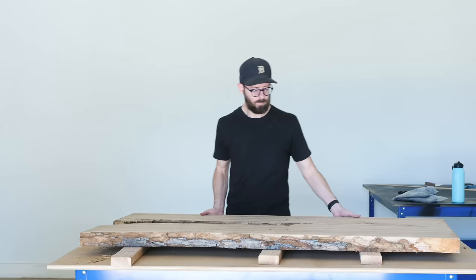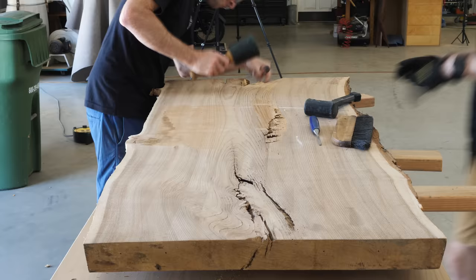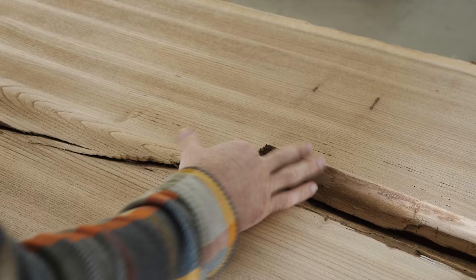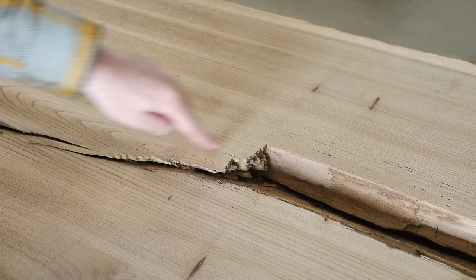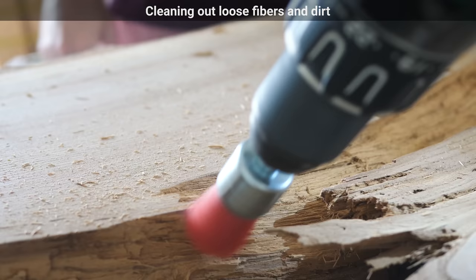So thank you to everybody who gave us input about that on the last videos. Now something we weren't thrilled about is how when we were removing the wood it kind of ended here with this less natural looking break. There were two ways we could go: either leave it as is or try to feather it into a more natural bottleneck. So we decided to leave it, and now we'll just have to wait until we see the finished piece to know if that was the right decision.